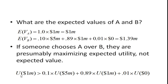We can write that as: the utility of 1 million dollars is greater than 10% of the utility of receiving 5 million, plus 89% of the utility of receiving 1 million, plus 1% of the utility of receiving nothing.